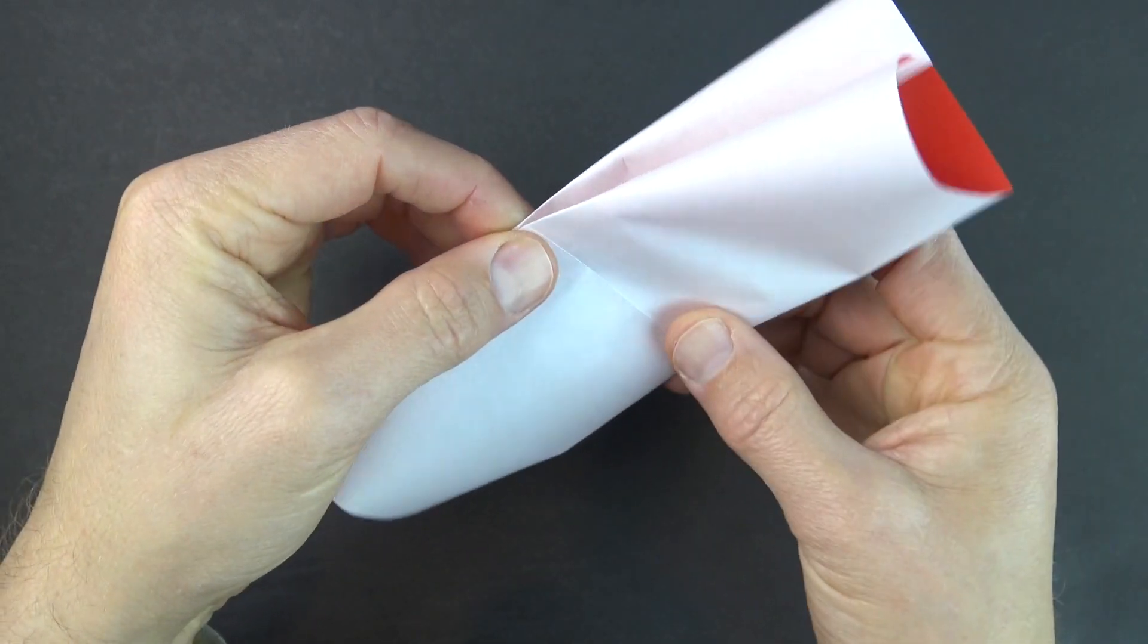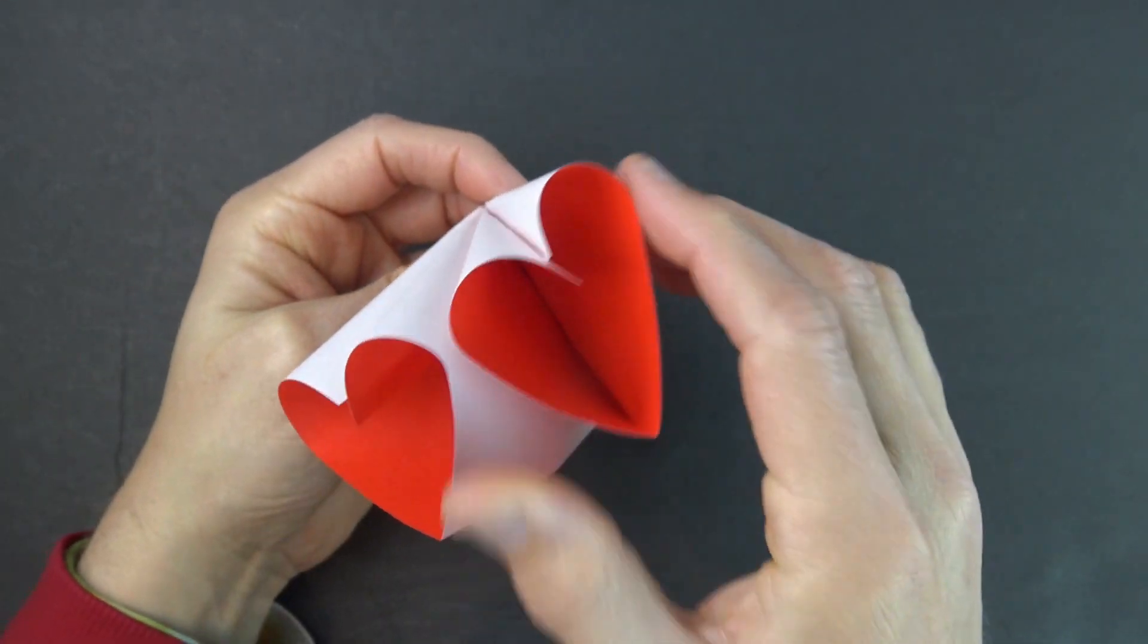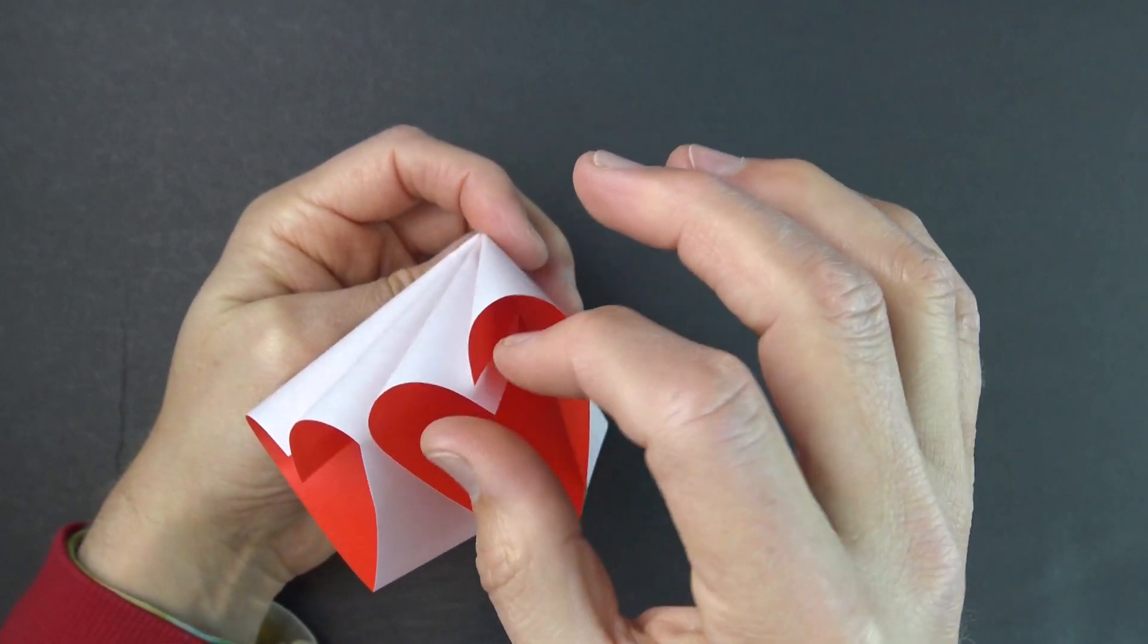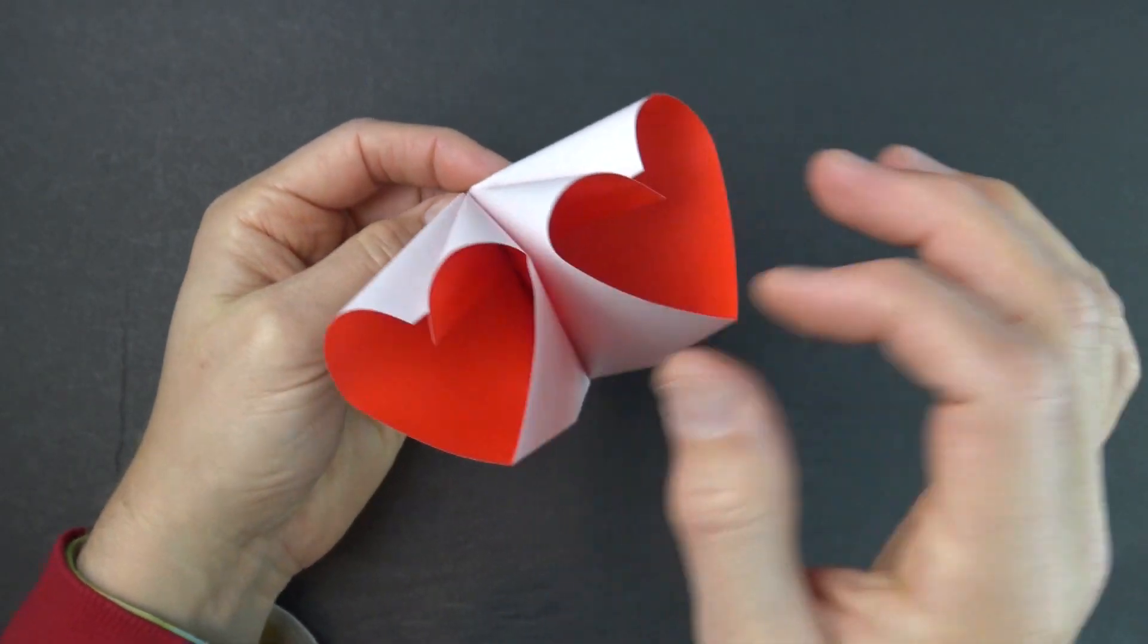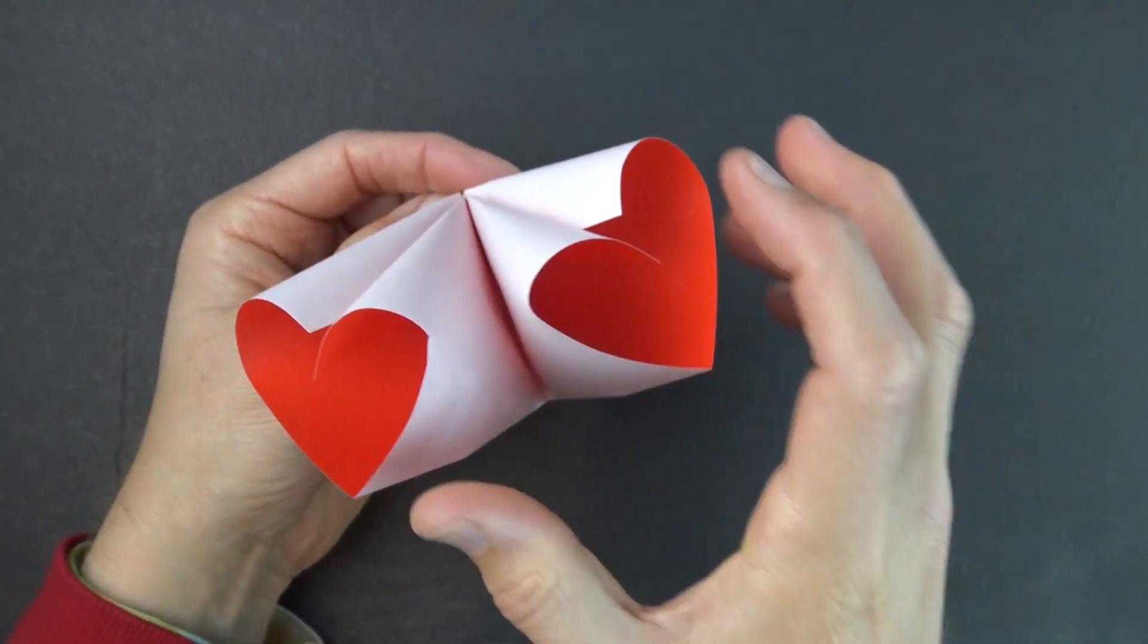And now fold in half, and you can see that the hearts are taking shape. But it's important that the two points come together. Otherwise, it's not going to look very good.